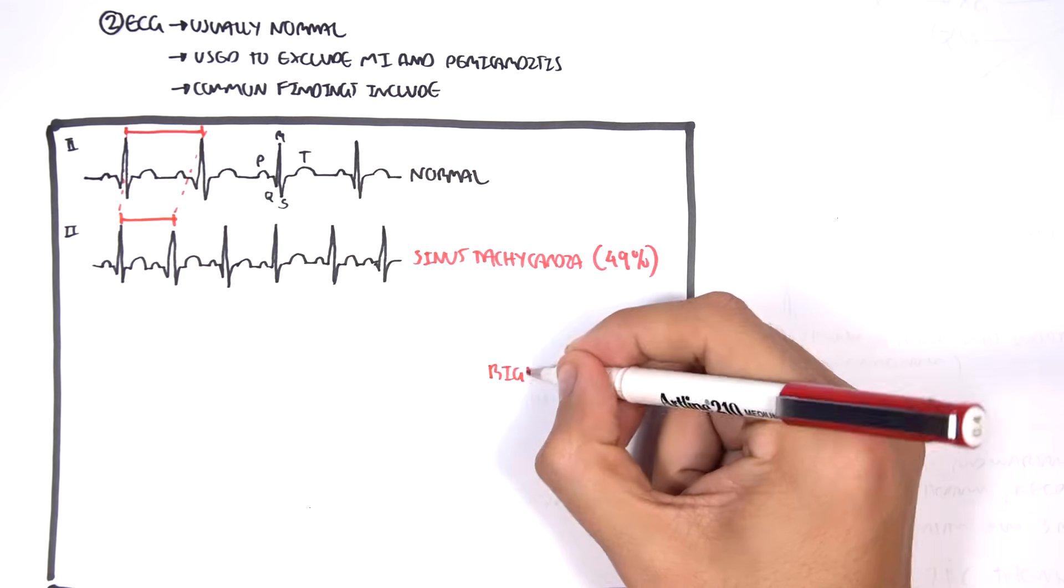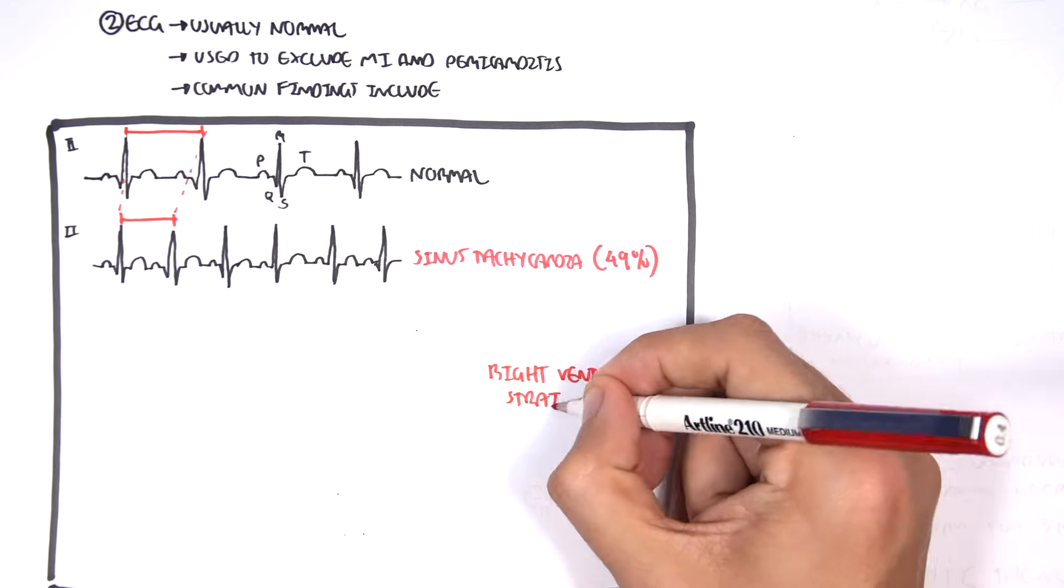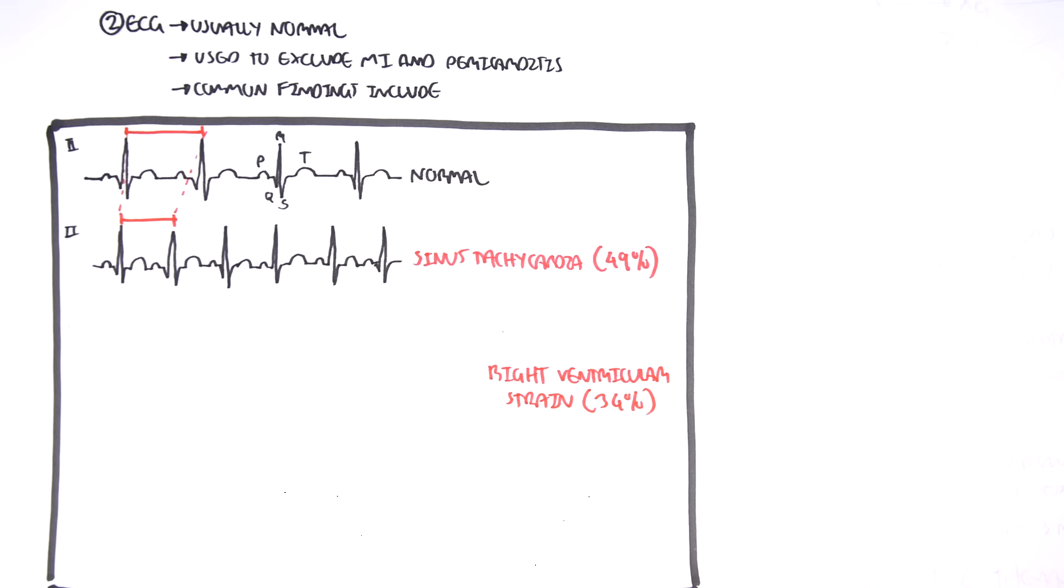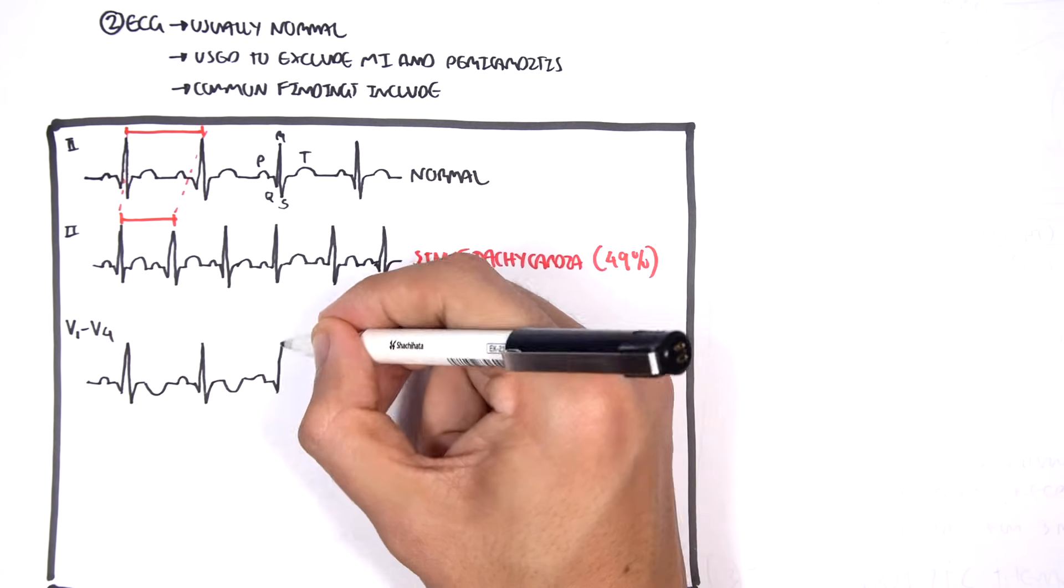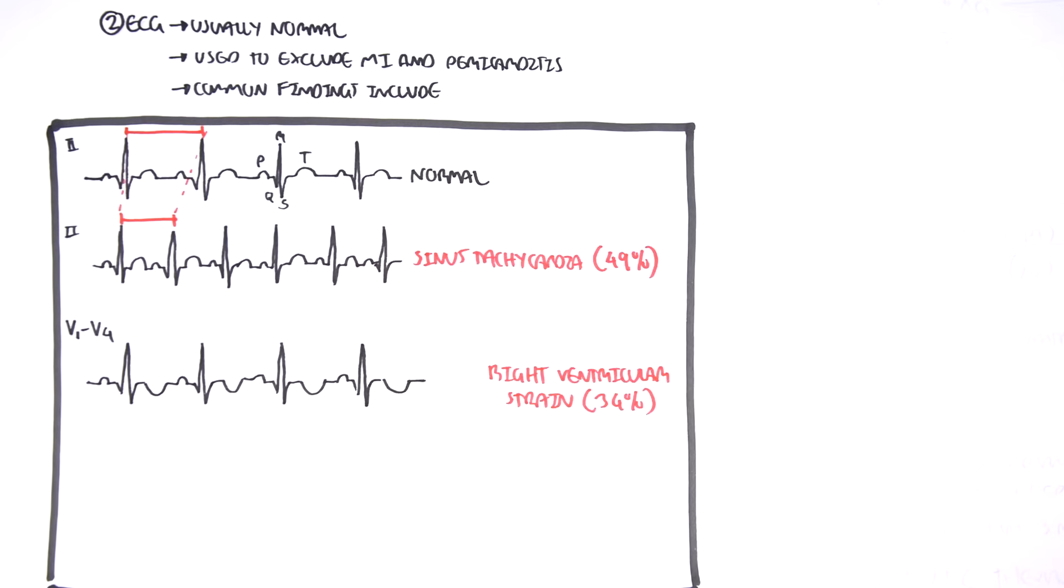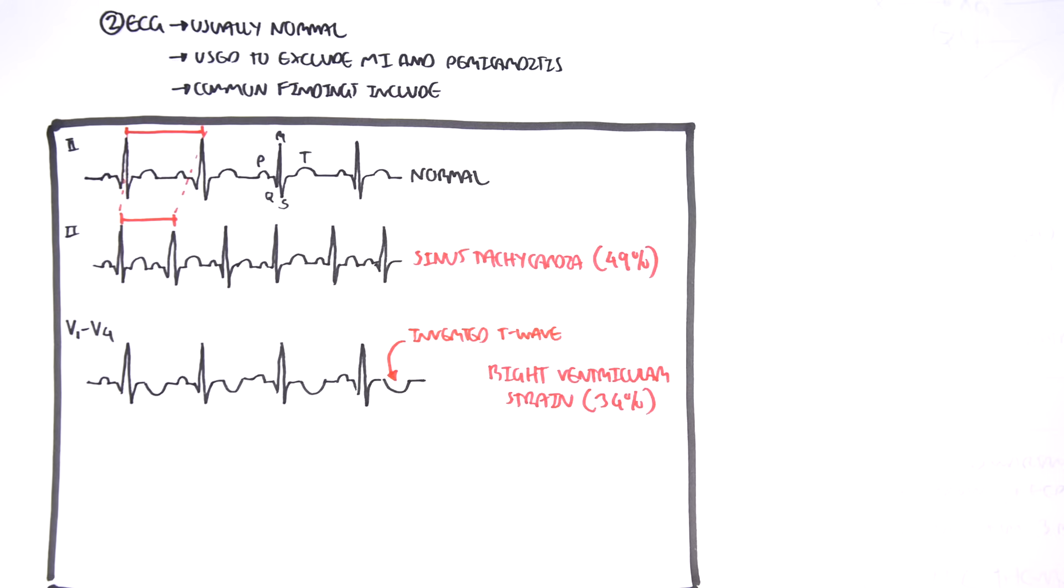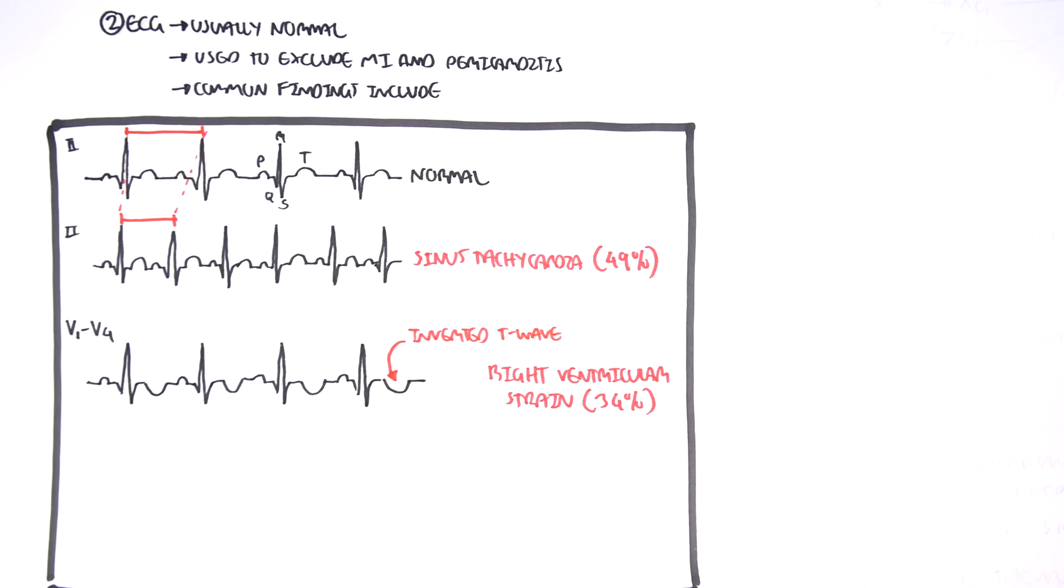Another thing you can see in PE, in about 35% of cases, is right ventricular strain. Right ventricular strain can be seen in leads V1 to V4. And essentially, if we draw it out, what you see is that the T wave is inverted. Of course, in ECG this doesn't actually look exactly like this, the actual PQRST wave, but the T wave is inverted for right ventricular strain.